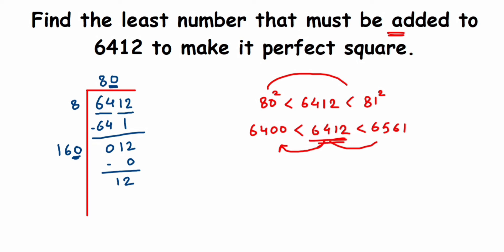6561 is the next perfect square after 6412. We almost reached the answer. Let's read the question once again. They're asking us to find the least number that must be added. Let's see how much we have to add from 6412 to get 6561. Simply subtract them: 6561 minus 6412 gives us 149.